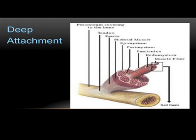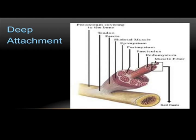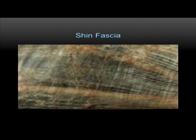Notice the parallel fibers and sheaths of the thoracolumbar fascia in this picture. They are arranged at angles to each other to provide greater strength and extensibility. Be aware of this because throughout this talk you'll be thinking about how tissue runs at particular angles for different functions.